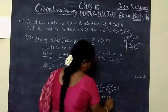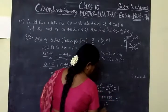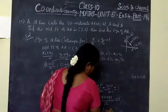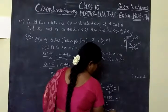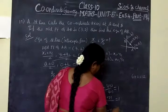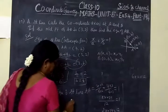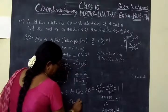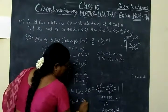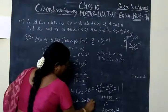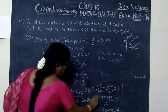So the answer is 2X plus 3Y equal to 12. Therefore, the equation is 2X plus 3Y minus 12 equal to 0.